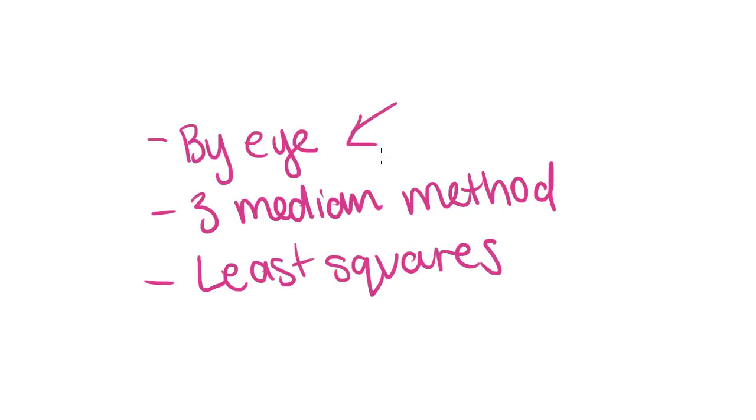Now this one here by eye simply means using your eyes, having a look at it and kind of vaguely guessing where a line could go. Because of that everyone's answers are slightly different. So this doesn't often occur on an exam, but you may get it in a SAC or something like that. So it's worth knowing what that is. But the main two that we'll be looking at are the three median method and the least squares regression line.